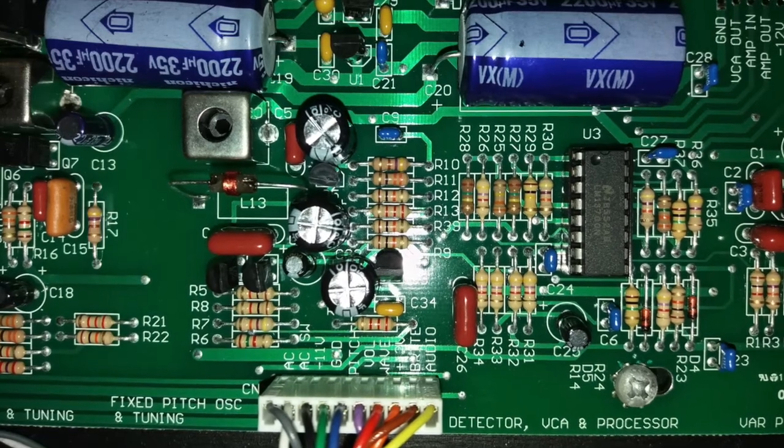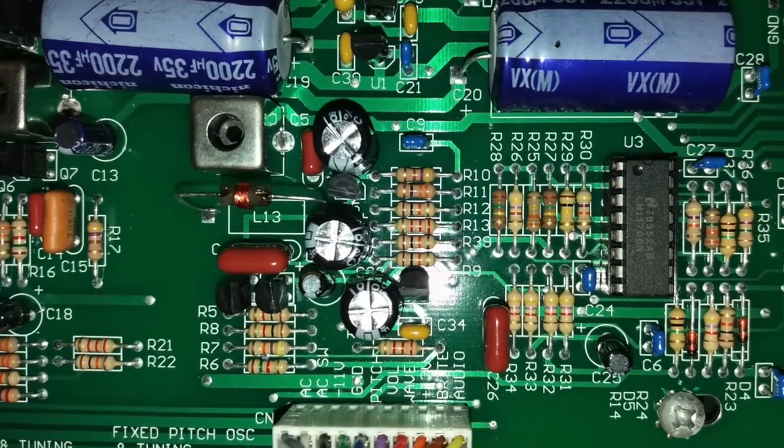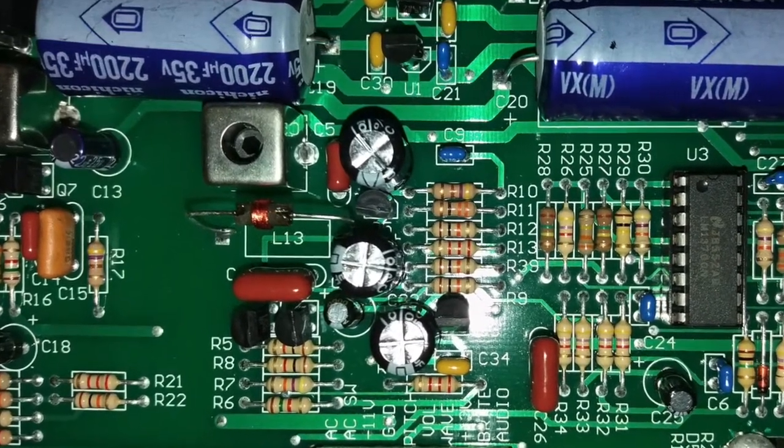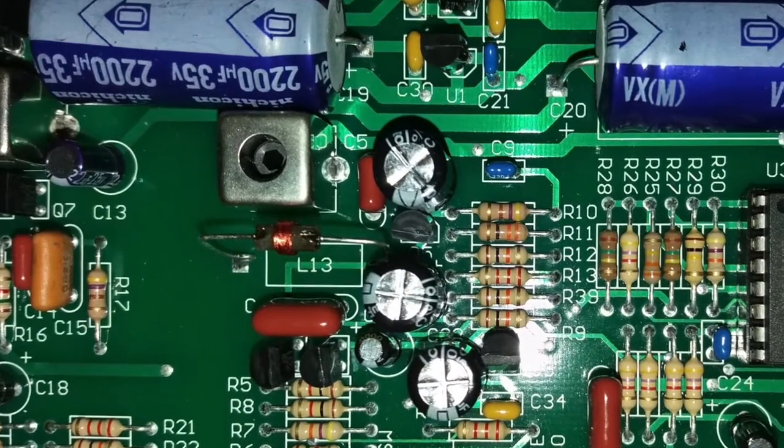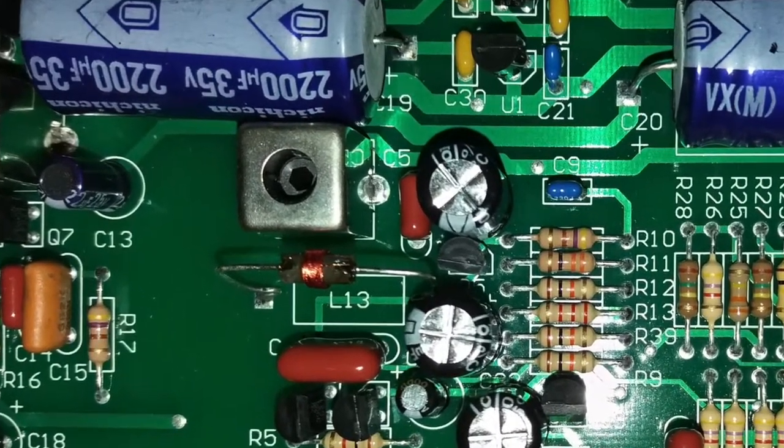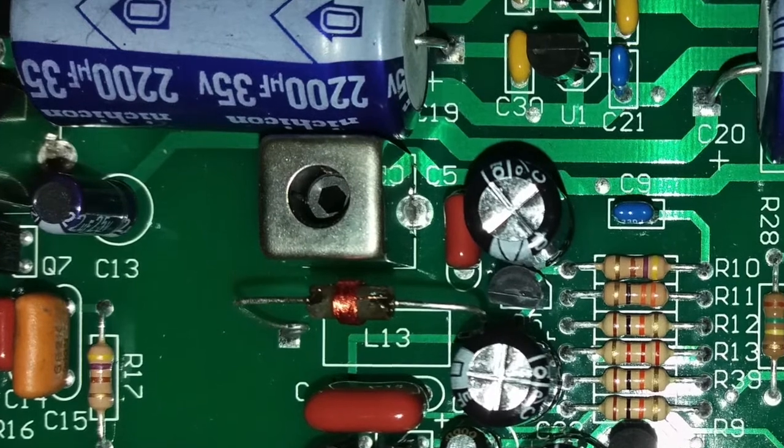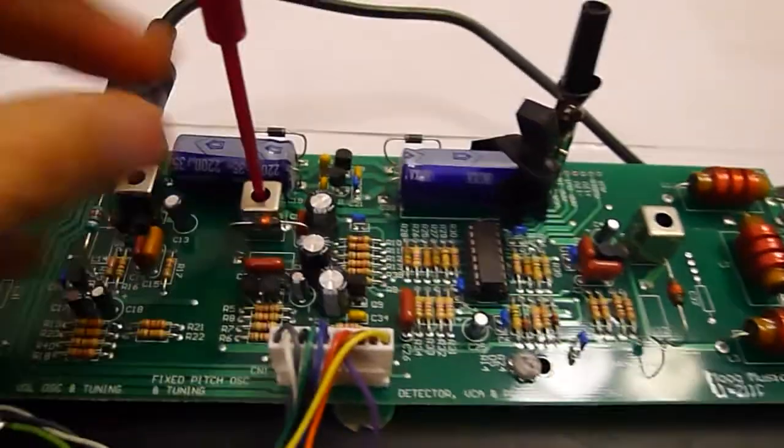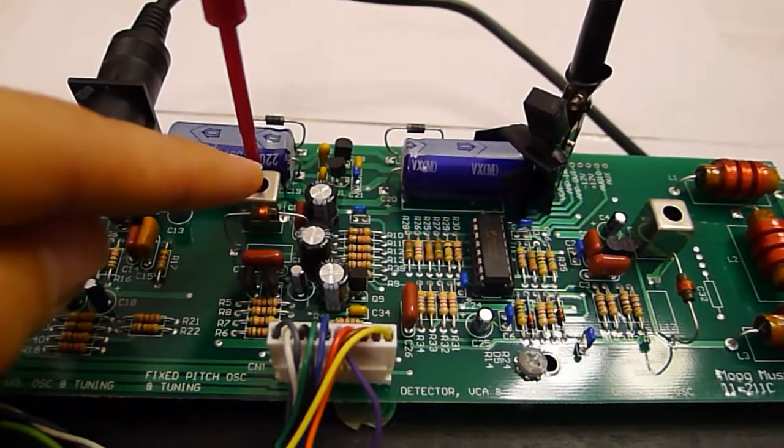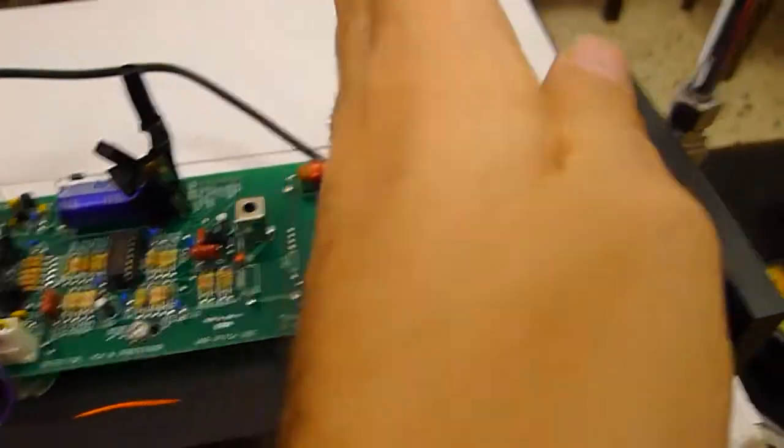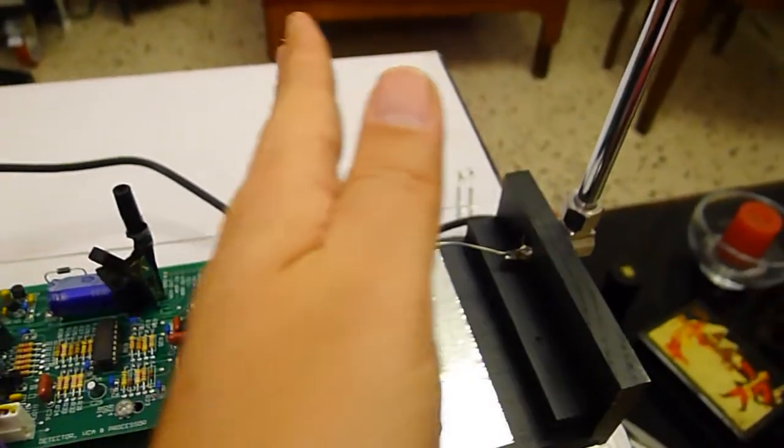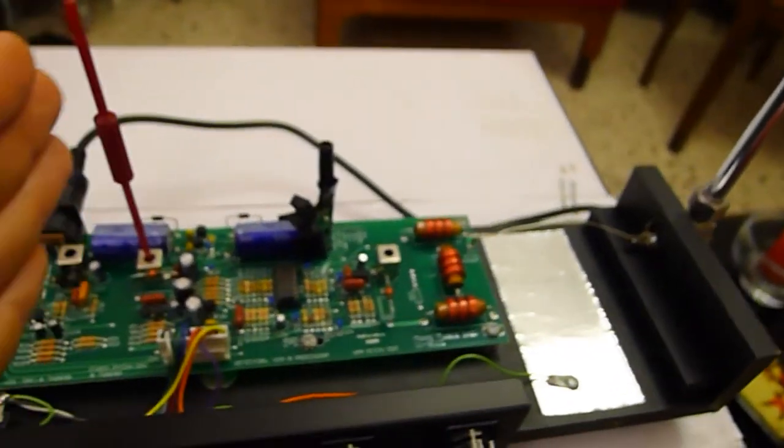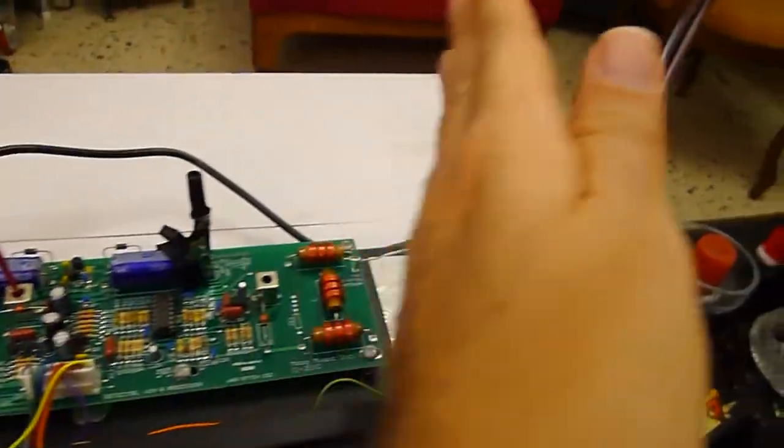L6 coil, in this picture, controls the range or how far from the antenna the zero-beat point is located. The zero-beat point moves farther away from the pitch antenna the more you turn the pitch knob counterclockwise, at least, as I already told you, in new production Etherwaves.